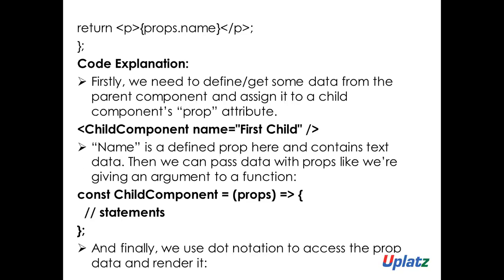First you need to get some data from the parent and then assign it to the child props attribute. After that, pass the data to props like an argument in a function. I created an arrow function and am passing, then returning the props data — props.name — that is the way to get data from the parent component to a child. This is how the unidirectional data flow works.